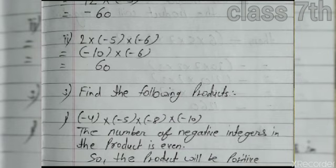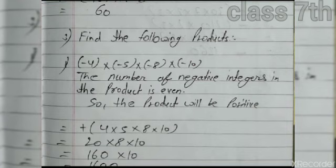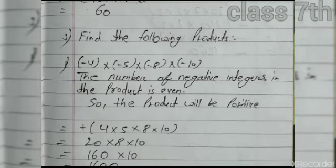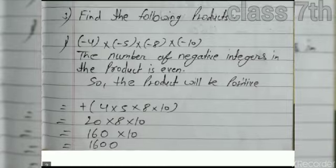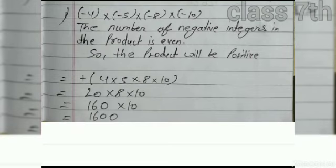Question number three: Find the following products. Minus 4 multiplied by minus 5 multiplied by minus 8 multiplied by minus 10. We compute step by step: 4 into 5 into 8 into 10. That is 20, then 20 multiplied by 8 is 160, and 160 multiplied by 10 is 1600.